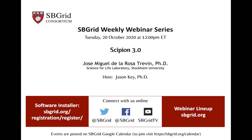Hi everybody, this is Jason Key at SBGrid. Thanks for joining today. I'm happy to say today we've got Jose Miguel de la Rosa at Trevin. Jose Miguel is working in Stockholm, but he's coming to us today from Madrid. He's the primary developer around Scipion. Scipion is a big cryo-EM processing package that uses its own tools around XMIP, plus a bunch of other packages like Relion, EMAN2, and Chimera, to give you a one-stop shop of all the cryo-EM processing tools you might need to run through a workflow.